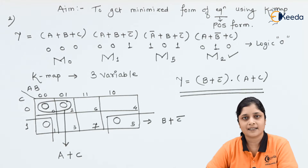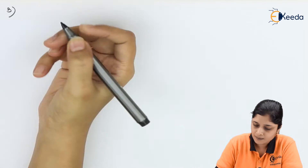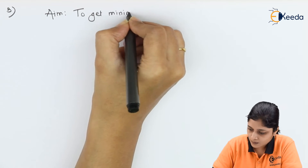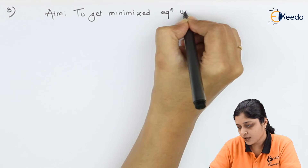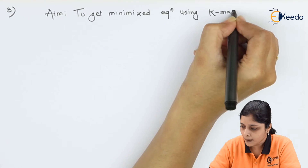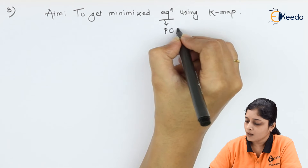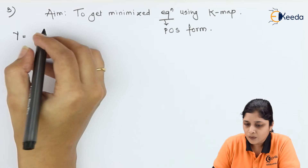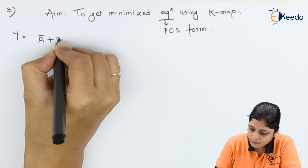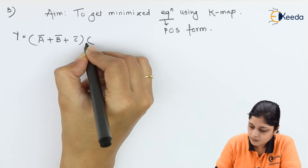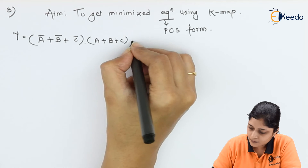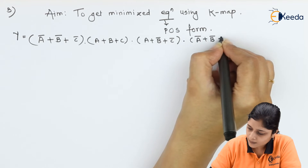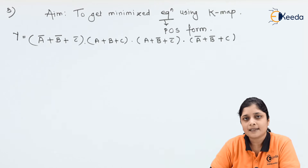Now the third example: your aim is to get the minimized equation using K-map, and the given equation is of POS form. Y = (A̅ + B̅ + C̅) · (A + B + C) · (A + B̅ + C̅) · (A̅ + B̅ + C). The next step is calculating the max terms.